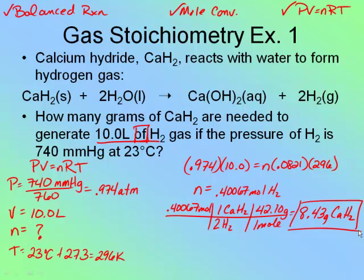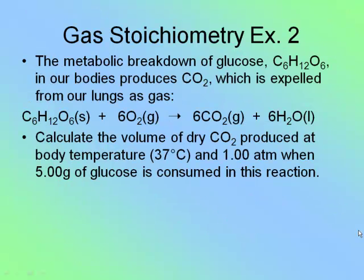Now let's look at another example. The breakdown of glucose in our bodies produces carbon dioxide, which is expelled from our lungs as gas. Calculate the volume of dry CO₂ produced at body temperature, 37 degrees Celsius and 1 atmosphere, when 5 grams of glucose is consumed. Again, there's no clear way to identify whether PV = NRT comes first or last, so I'll write down my formula and fill in the information.